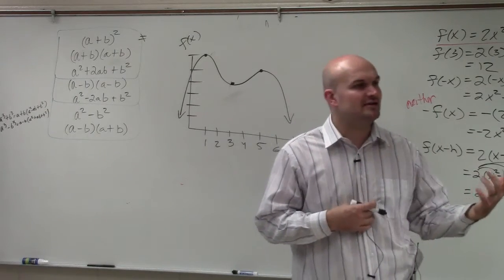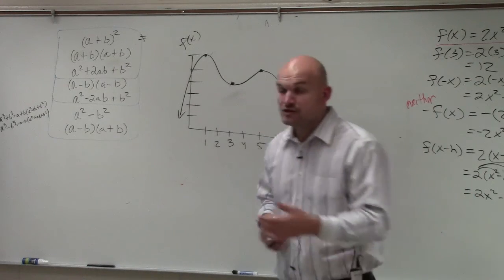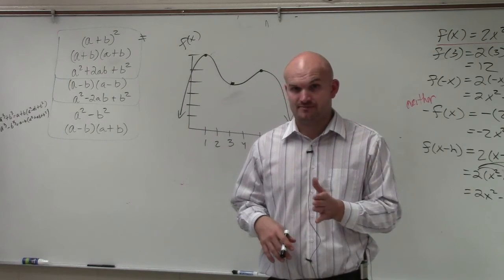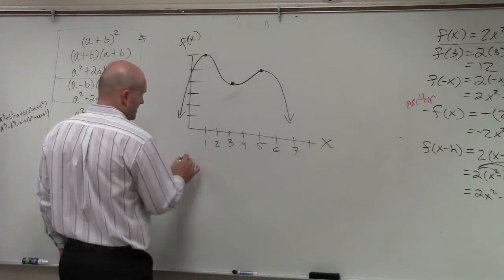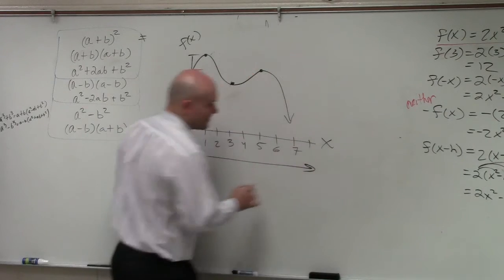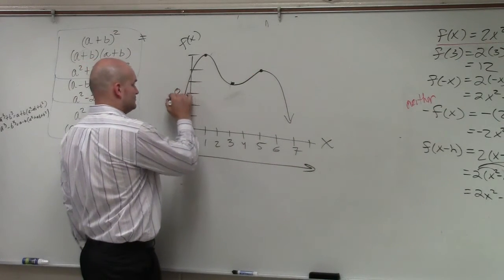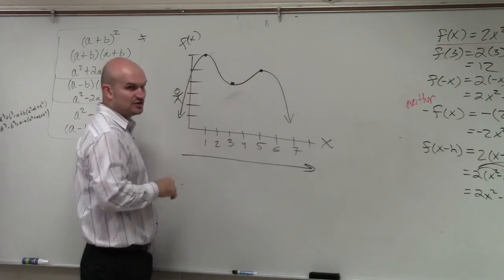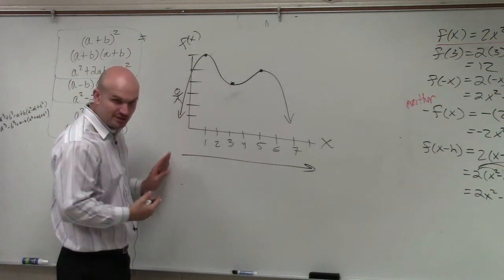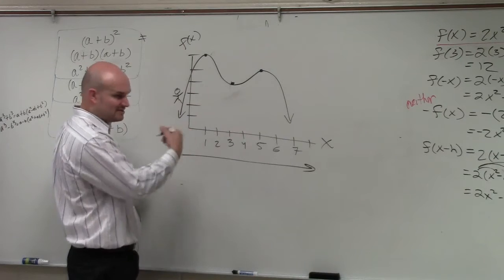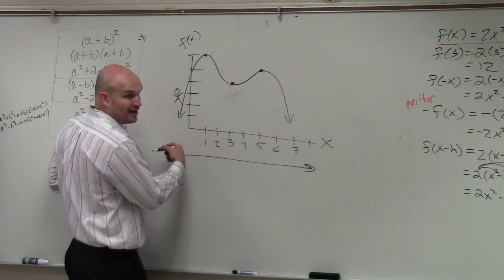...we're going to describe it using only the x values. You guys read from left to right, correct? So from the left to the right, picture yourself like a little man walking. He's following this little function. Now, this arrow is going to continue going all the way down. So the farthest left we're going to be going is in negative infinity, right?